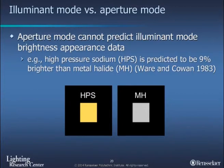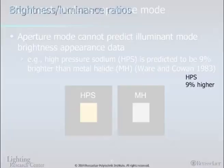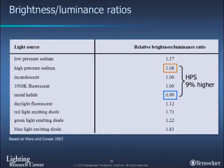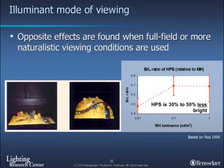Let's shift gears from aperture mode or signal lights to illuminant mode, more in line with architectural lighting. If you take the brightness-luminance ratios from before, the prediction would be that high pressure sodium, because it has a hue to it, is going to be seen as 9% brighter than metal halide. But we began in the early 90s to test that, and what we found — as you can appreciate if you walk outside — is that for equal illuminance in a parking lot, high-pressure sodium sources are always seen as less bright than a white, metal halide, or white LED source. So you get opposite predictions from aperture mode compared to an illuminated outdoor scene.